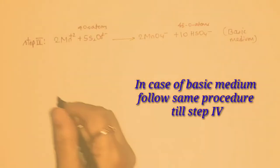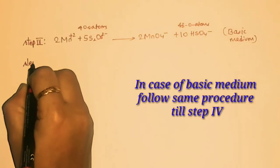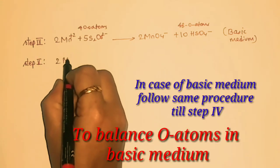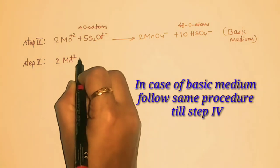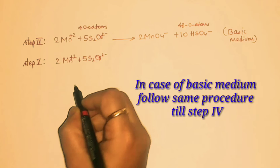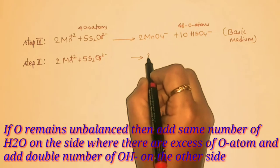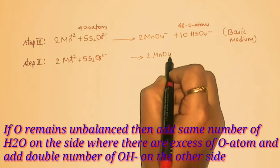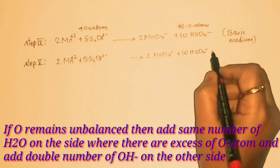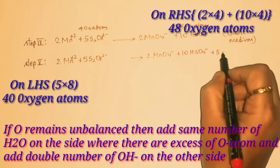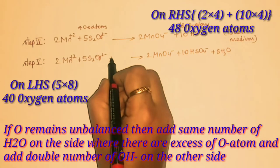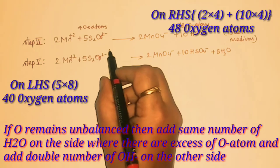In case of basic medium, we add water molecules on the side with excess oxygen. The equation becomes: 2Mn²⁺ + 5S₂O₈²⁻ → 2MnO₄⁻ + 10HSO₄⁻, and we add 8 water molecules and 16 OH⁻ ions on the left-hand side.